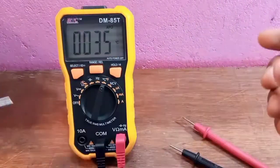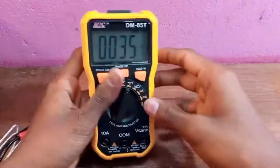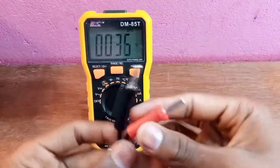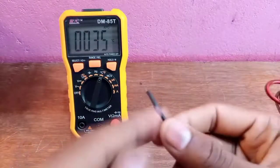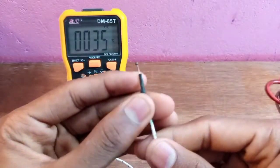Temperature can also be measured with this multimeter. I remove the black and red probes and insert the temperature measuring wire. This is the thermistor.